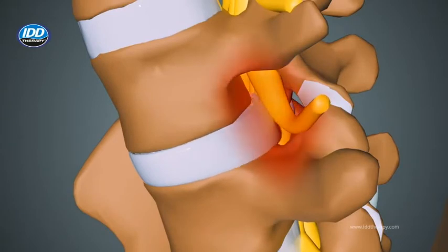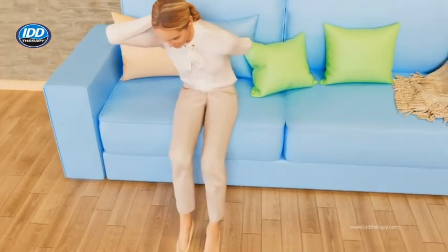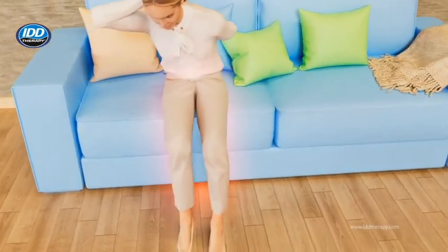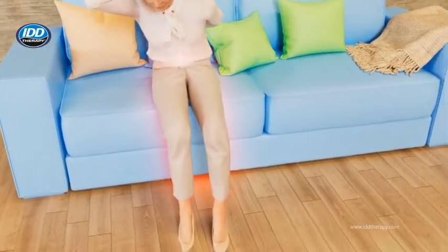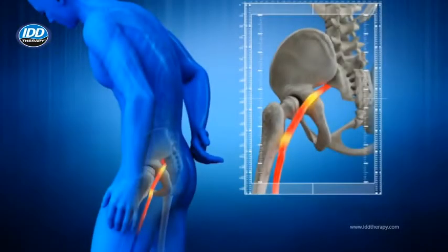Herniated disc, degenerated disc, or facet joint problems can cause compression of the nerve root at these foraminal openings. This kind of compression can lead to pain or possible neurological symptoms along the nerve pathway through the limbs. These arm or leg symptoms are called radiculopathy or sciatica.